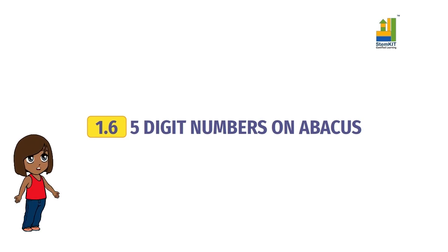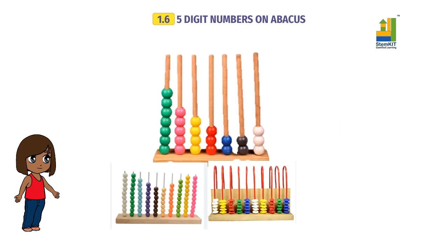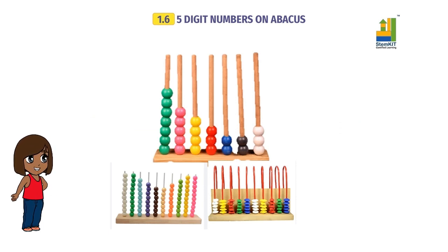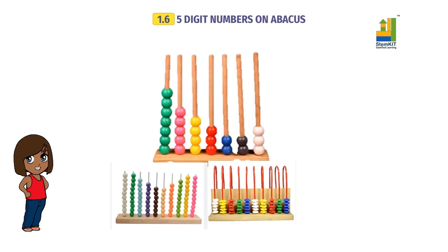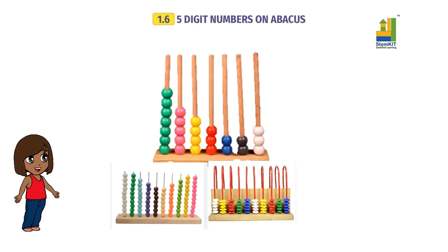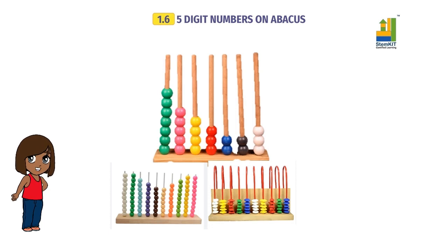So, what is a spike abacus? Here you see some models of spike abacus. It is a wooden board which has spikes inserted on it — hence the name, spike abacus. Each spike stands for a place value and the beads represent the digit. As you insert beads on the spike, the digit in that place value increases.